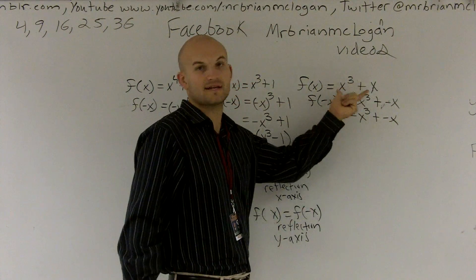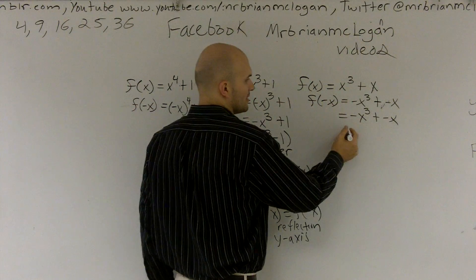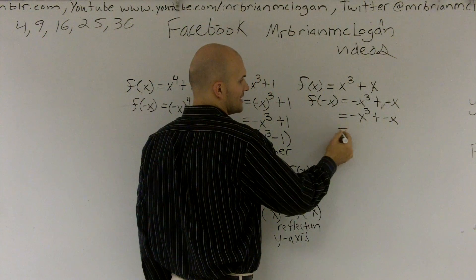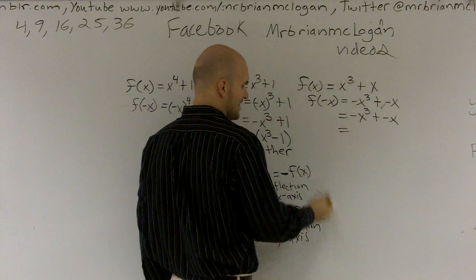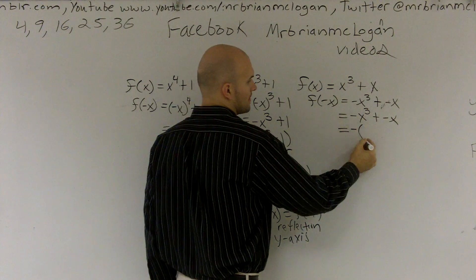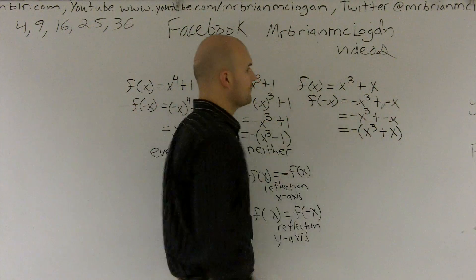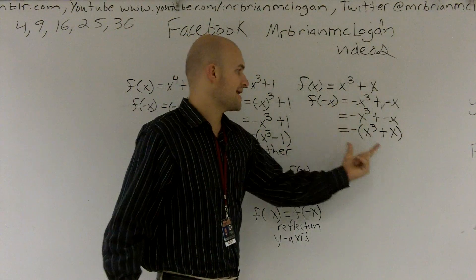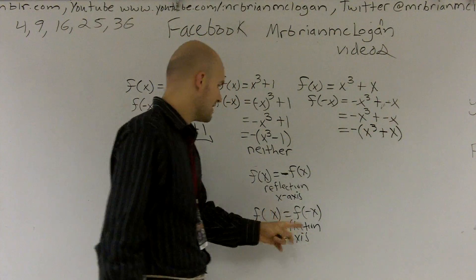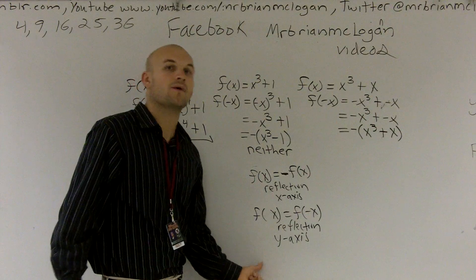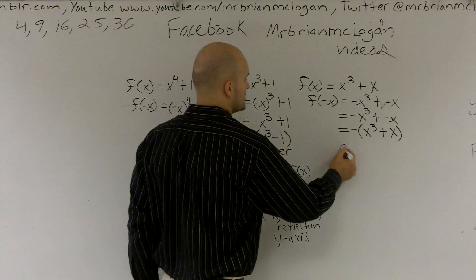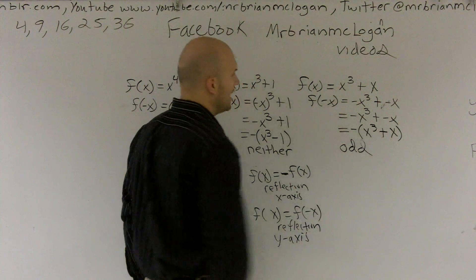But when I go ahead and factor out my negative 1, I'm left with x cubed plus x. Therefore, I get back my original function. So actually, this graph is symmetrical about the x-axis, and it's actually symmetrical about the y-axis. Therefore, this function is odd.